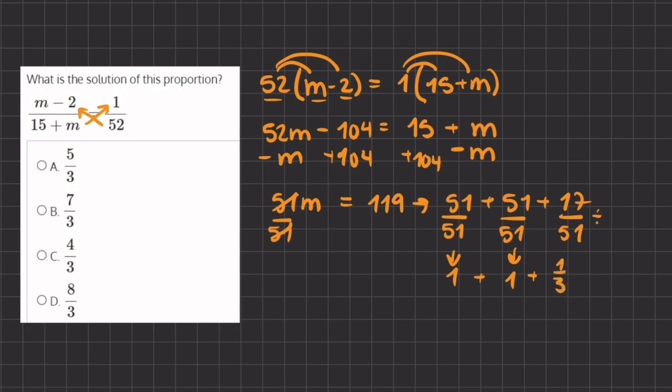This simplifies into 1 plus 1 plus 1 third. If we simplify this fraction, 17 divided by 17 gives us 1, and 51 divided by 17 gives us 3.